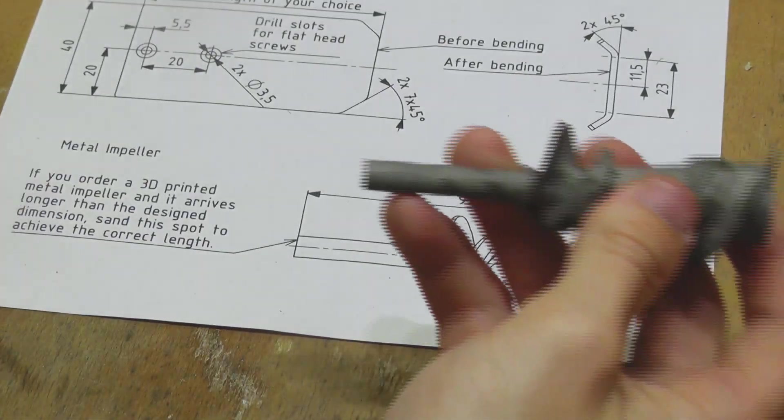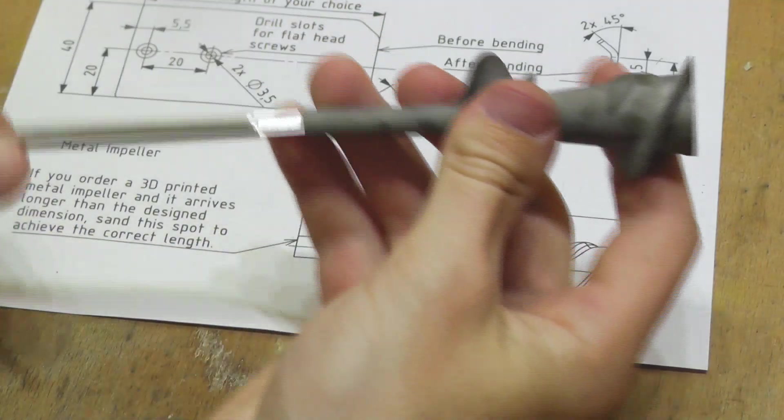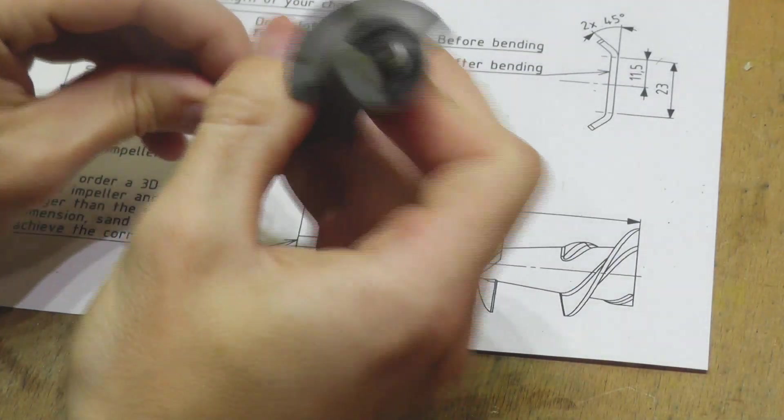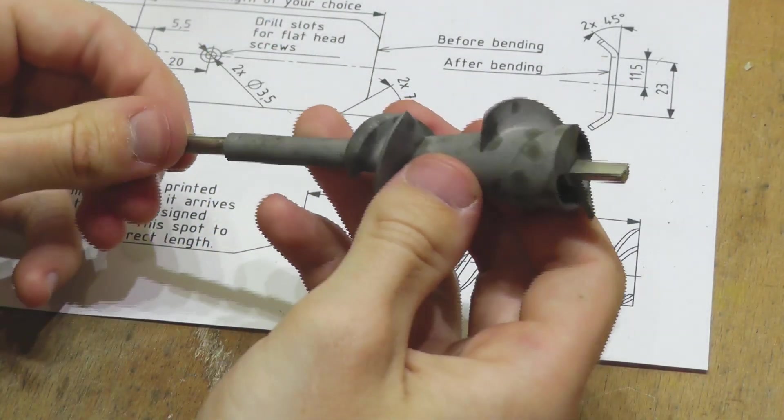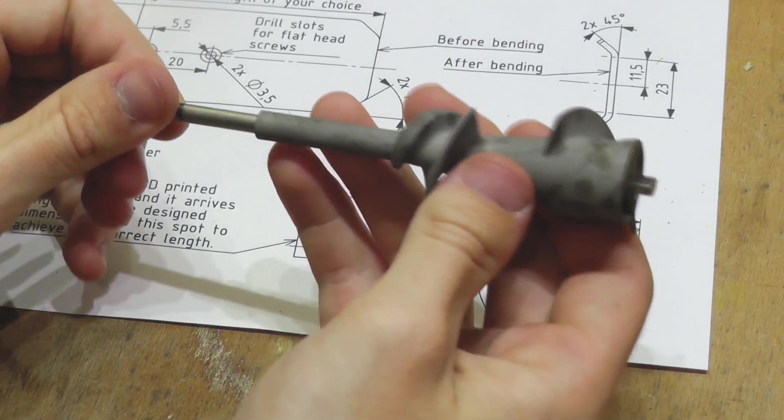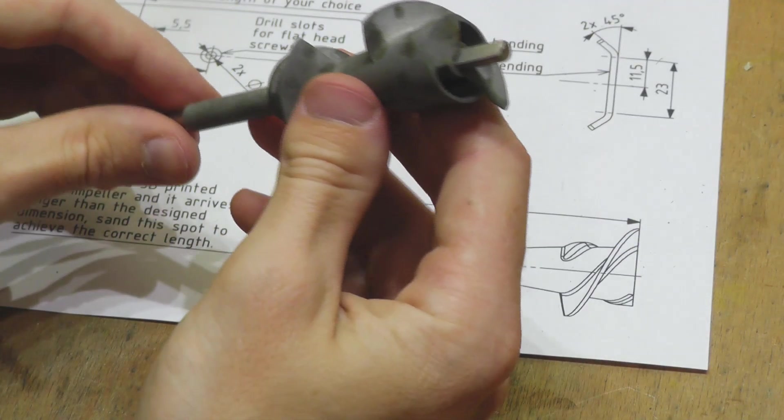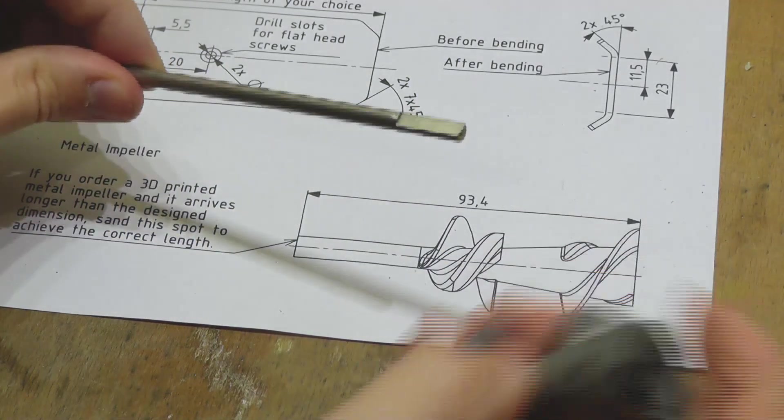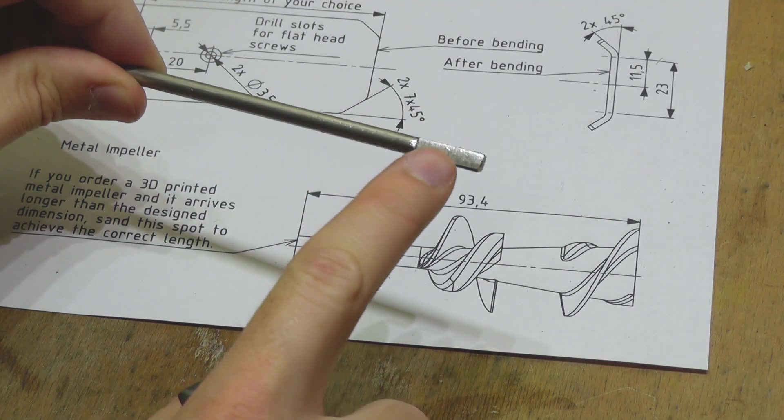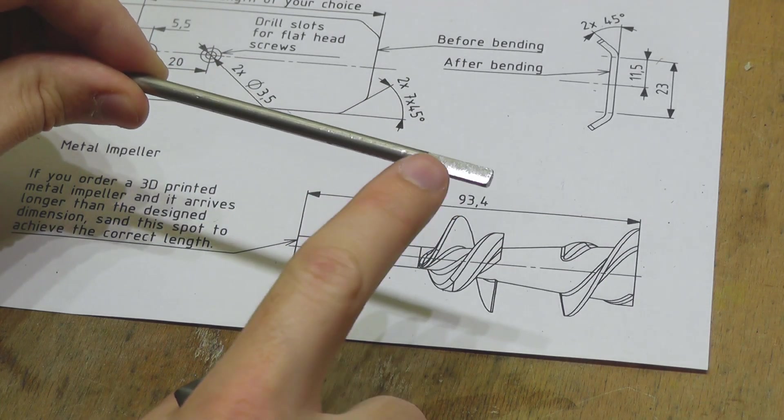The second thing you need to check is if the impeller fits on the shaft. In this case the impeller slides right on it. You can see it moves freely along it. If your impeller gets stuck on the shaft you should check the flat spot right here if it is big enough and long enough.